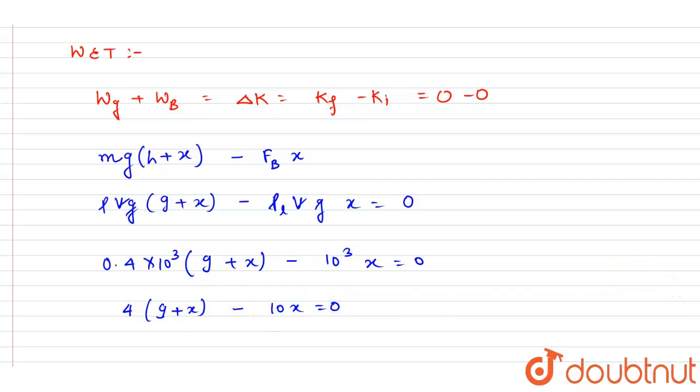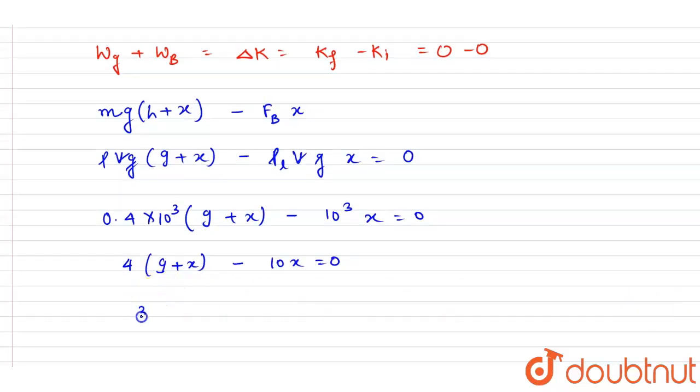equals to 0. So if you see, this is 36 plus 4x minus 10x, it will be minus 6x. So I will take this 6x on that side.